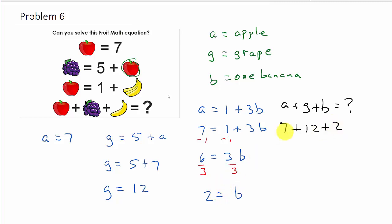And so, that's going to be what? 7 plus 12 is 19 plus 2 equals 21. And there's your answer.